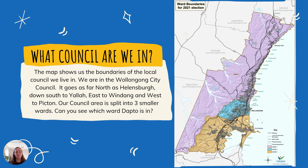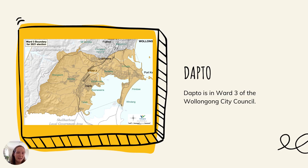Our council is also split up into three smaller wards. Can you see which ward Dapto is in? You might have heard a lot about our council or our local government area, especially during this time of coronavirus. Here you can see that we are part of Ward 3 in Wollongong City Council. That just means there are different councillors over each of the three wards that take care of the people for that region. As you can see, there's Dapto right in the centre.